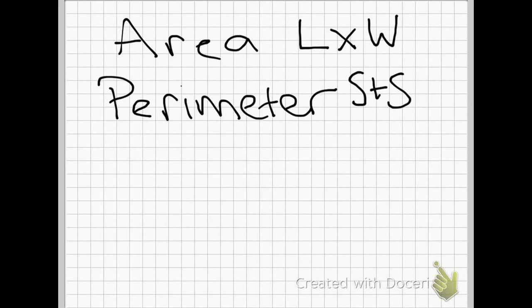It's side plus side plus side, however many sides there are. Today we're going to learn how rectangles with the same area can have different perimeters.